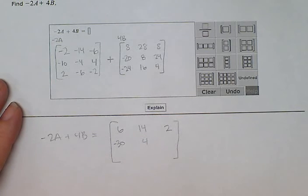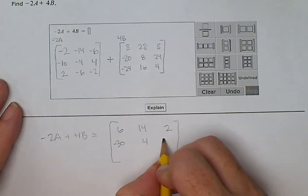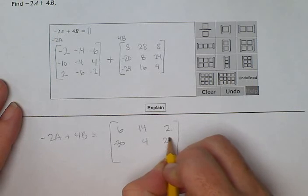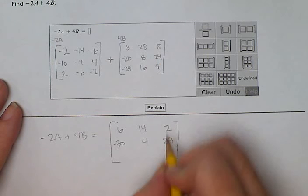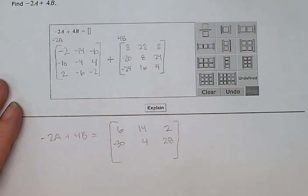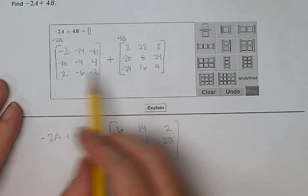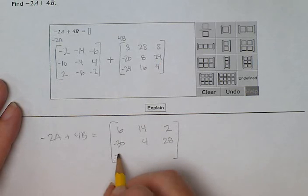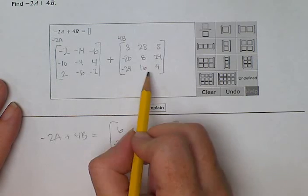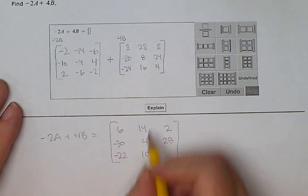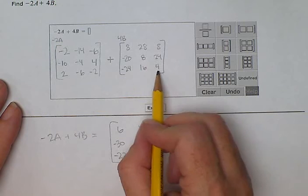4 plus 24 is 28. Sorry, I said that wrong. Now 2 plus -24 is -22. -6 plus 16 gives us a positive 10. -2 plus 4 is a positive 2.